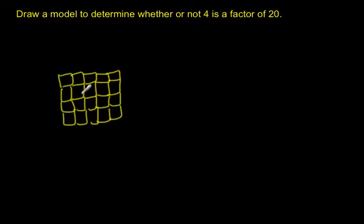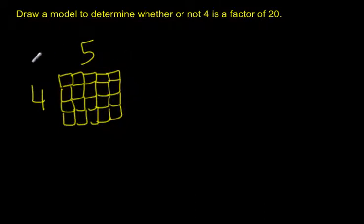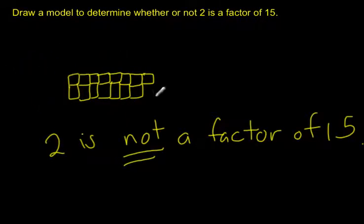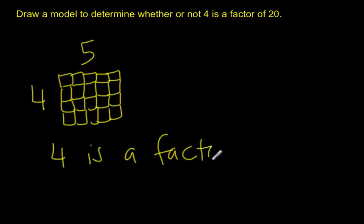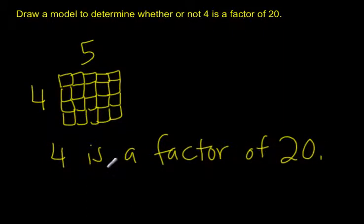I now have 4 rows of 5: 1, 2, 3, 4 rows and 1, 2, 3, 4, 5 in each row. I used all 20 of my tiles. So I have 4 rows of 5 and I was able to make an array. Back to the previous problem, I had a missing piece, so I was not able to make an array and 2 was not a factor of 15. But with this example, I was able to make an array. So yes, 4 is a factor of 20 because I was able to make that array.